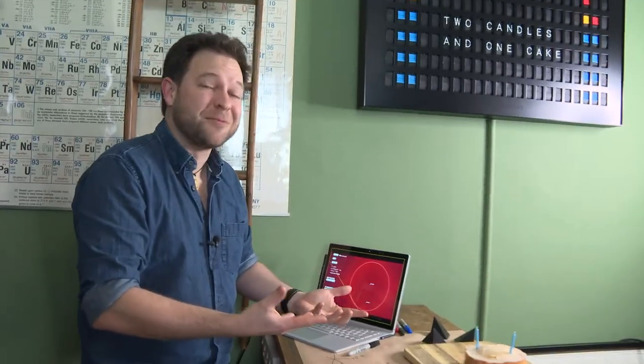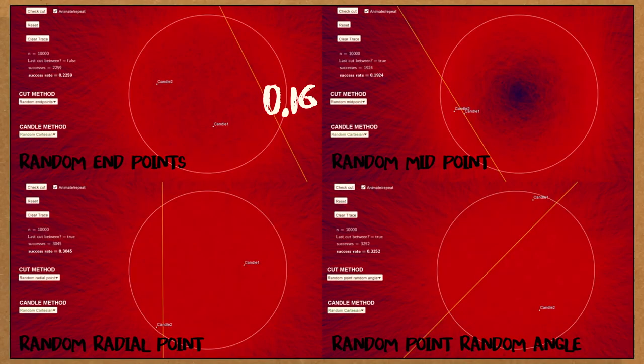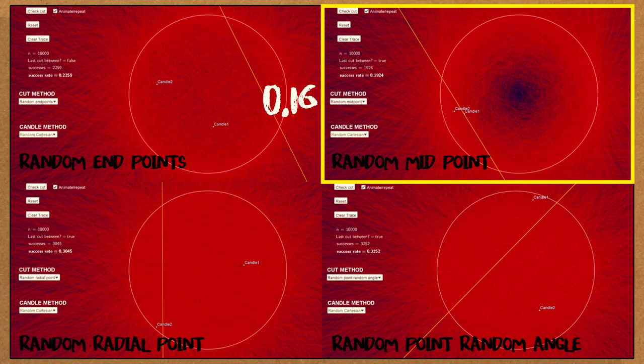And if you run different simulations, here are just the pictures of what happens if you choose the cuts in different ways. This cut is where you choose a random midpoint for the chord, and you see it hardly ever cuts or just less often cuts near the middle. And that's a good reason why we're getting different probabilities.